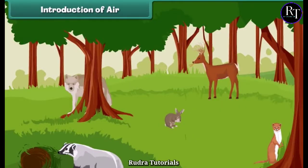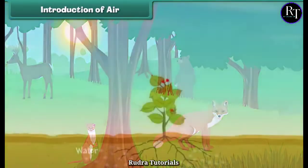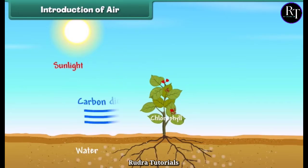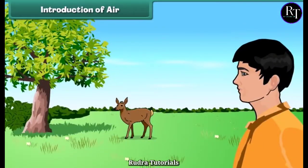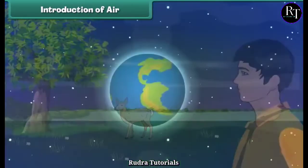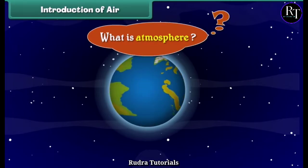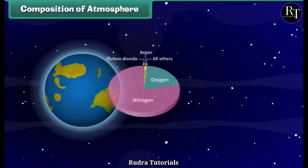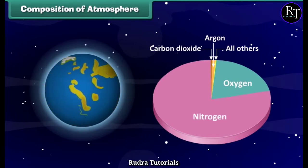Air is very important for almost all life on earth, including plants and animals. Plants need carbon dioxide from air to do photosynthesis and release oxygen into the air. Human beings and animals need to breathe air to get the oxygen they need to survive. Do you know the atmosphere surrounding Earth is full of air? The atmosphere is made up of a mixture of gases, primarily nitrogen and oxygen, that wrap around the Earth like a blanket.